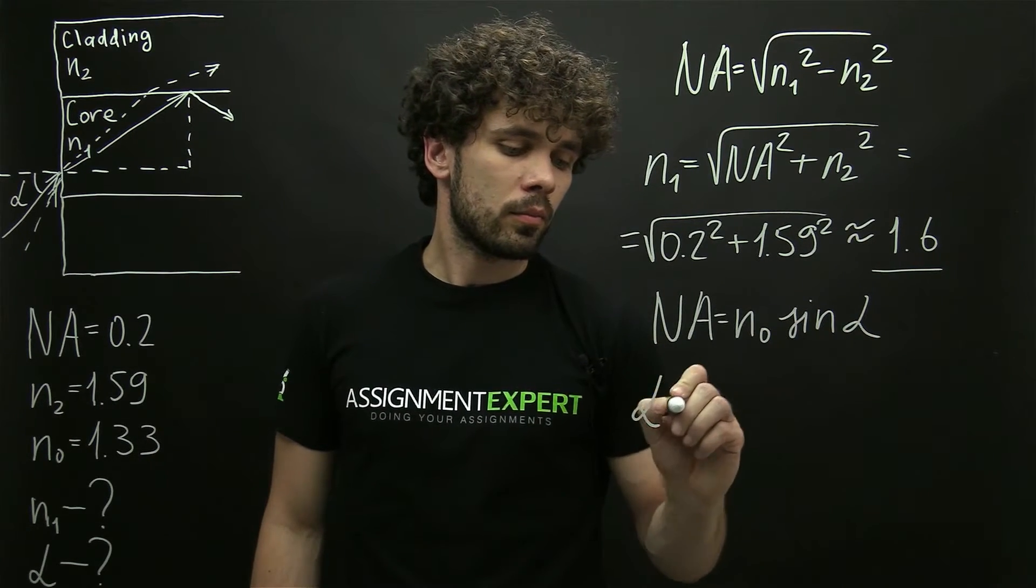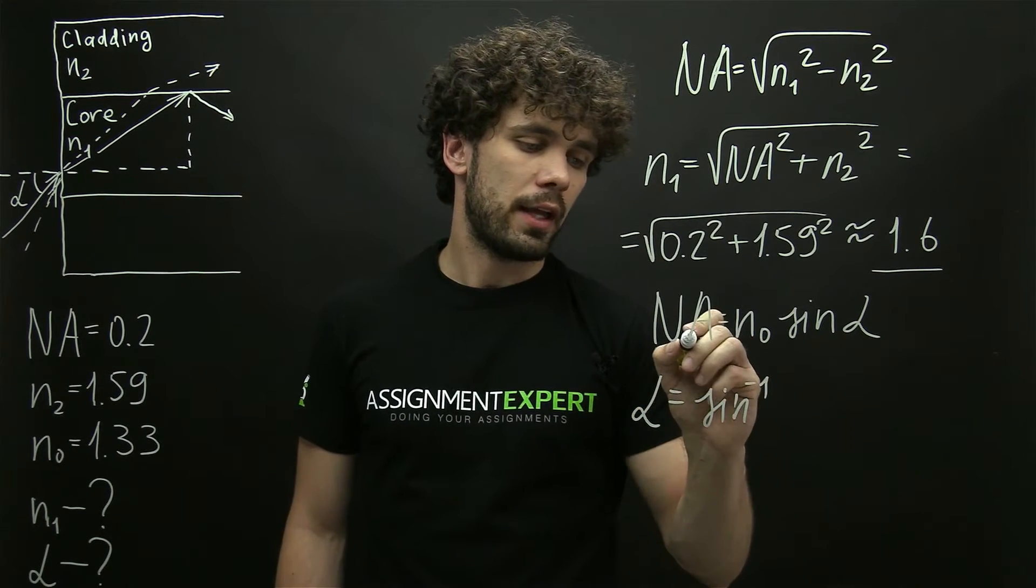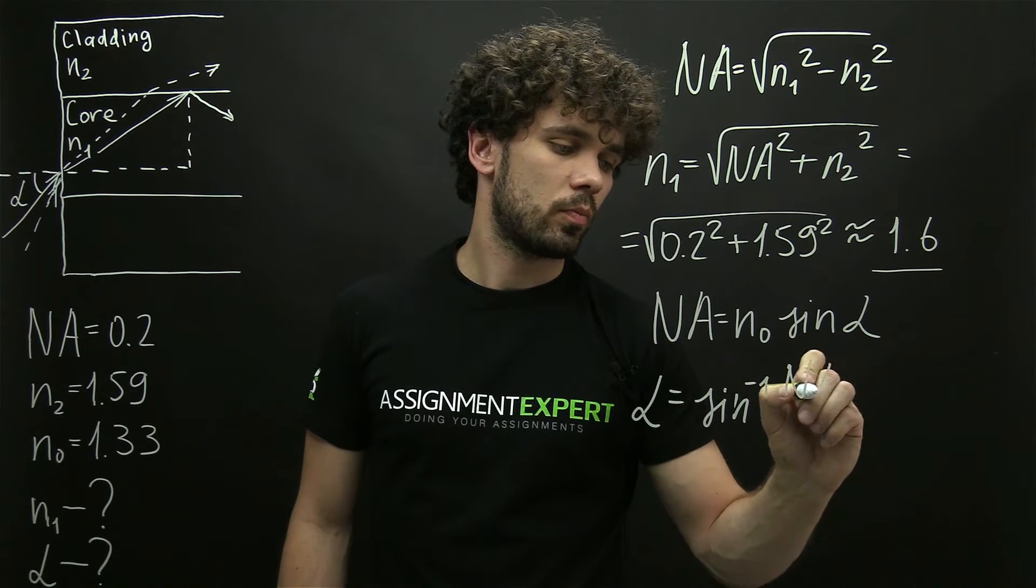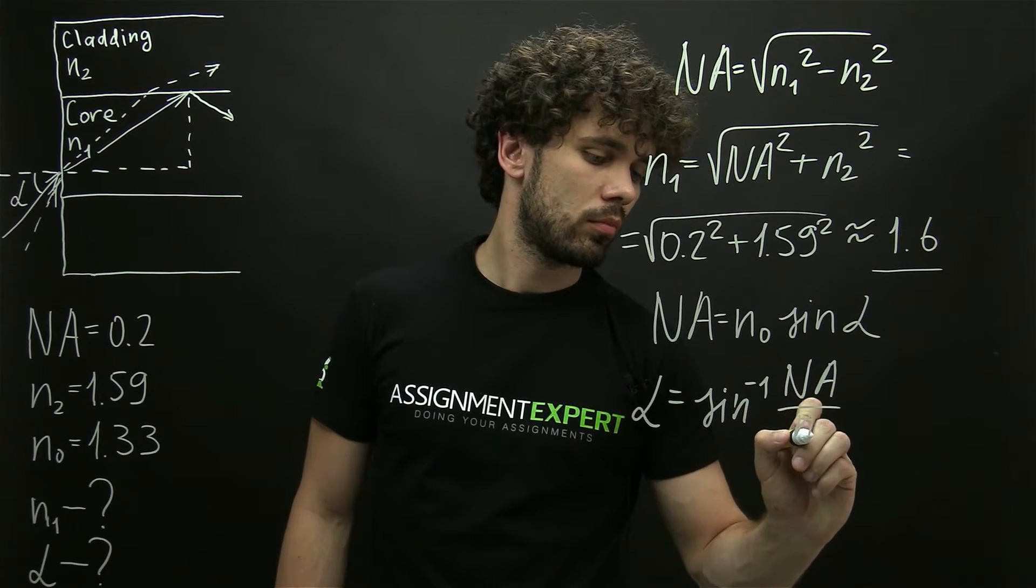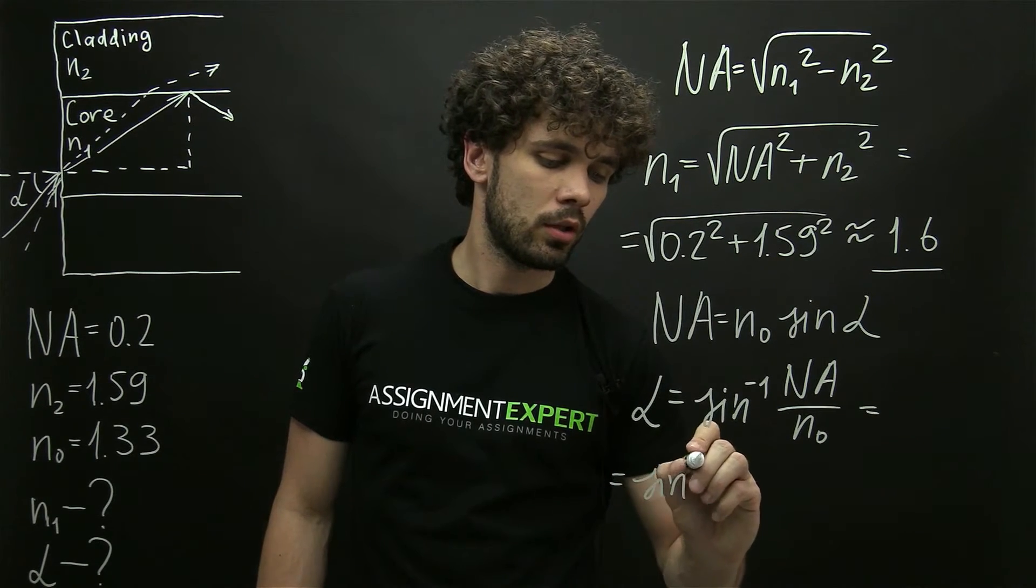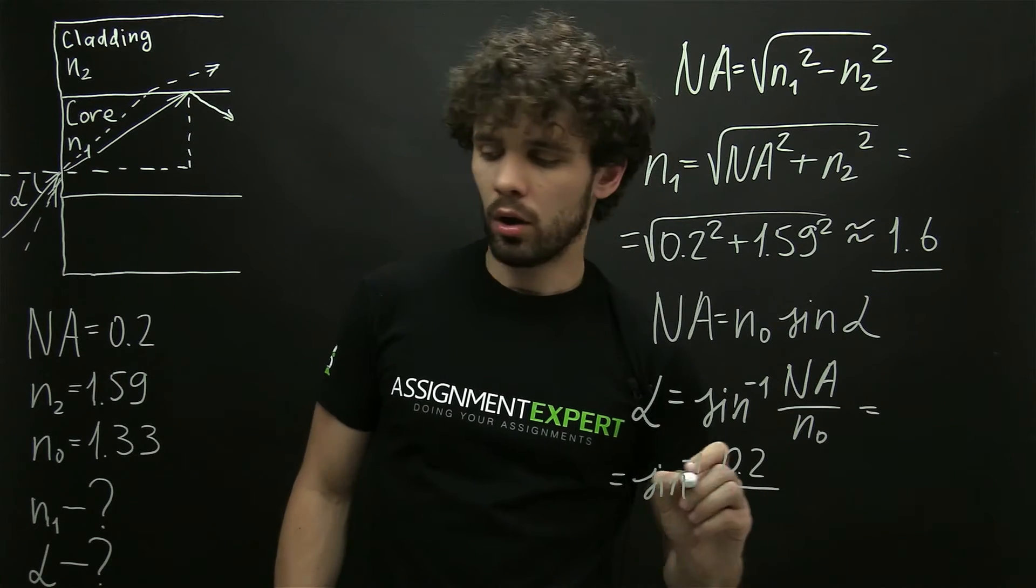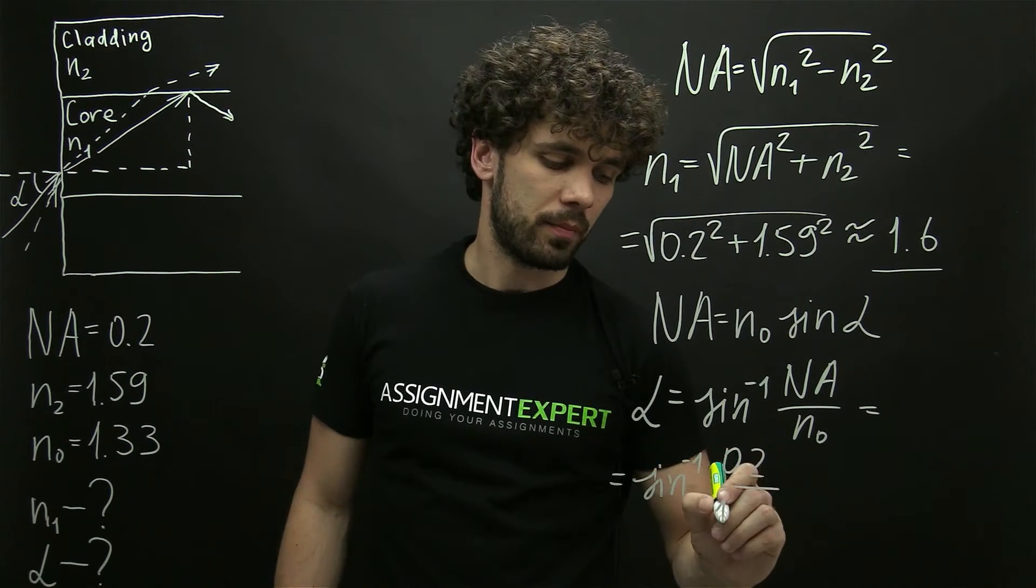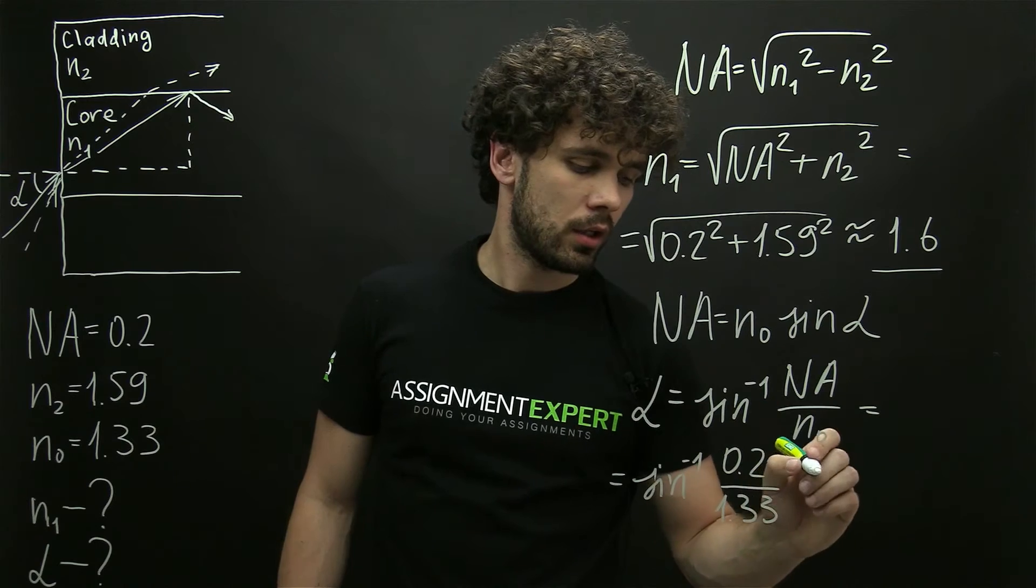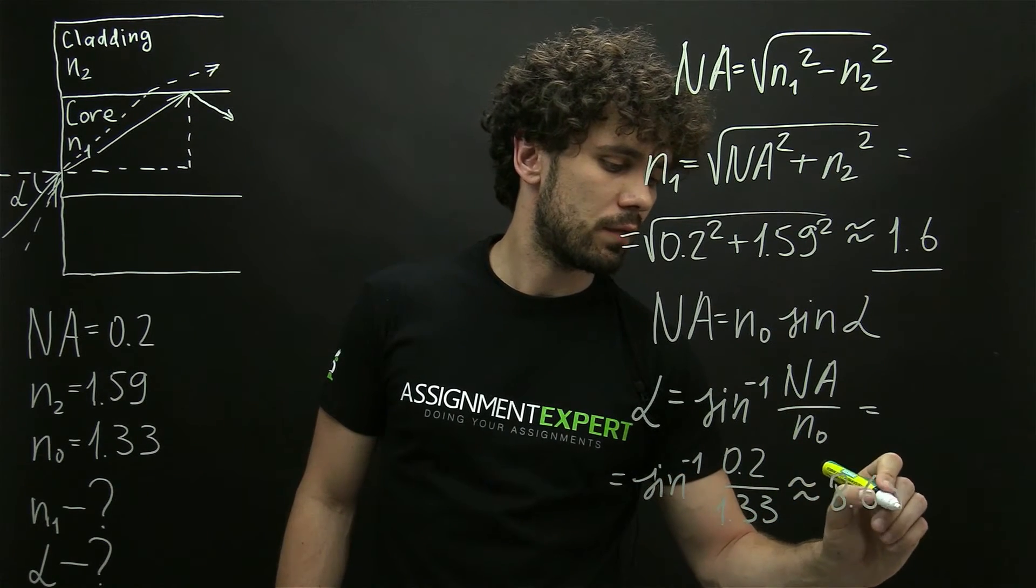Alpha equals the inverse sine of NA over n0 and this is the inverse sine of 0.2 over 1.33 and equals approximately 8.65 degrees.